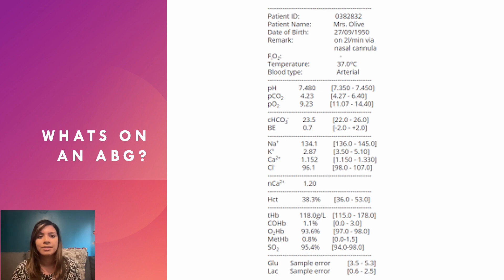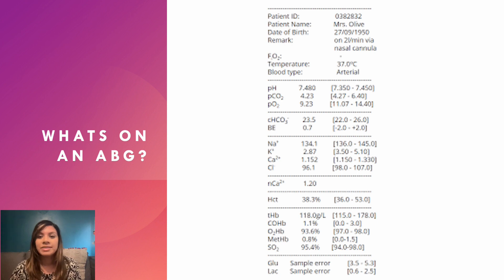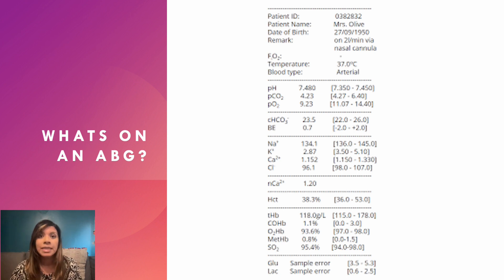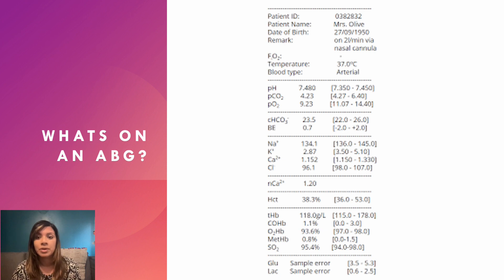You take the blood sample to the analyzer and it produces something that looks like a shopping receipt with all the numbers. For simplicity in this session, we're mostly going to focus on the pH, the partial pressure of oxygen, carbon dioxide, and bicarbonate — though you can also see lactate, glucose, and haemoglobin on there as well.